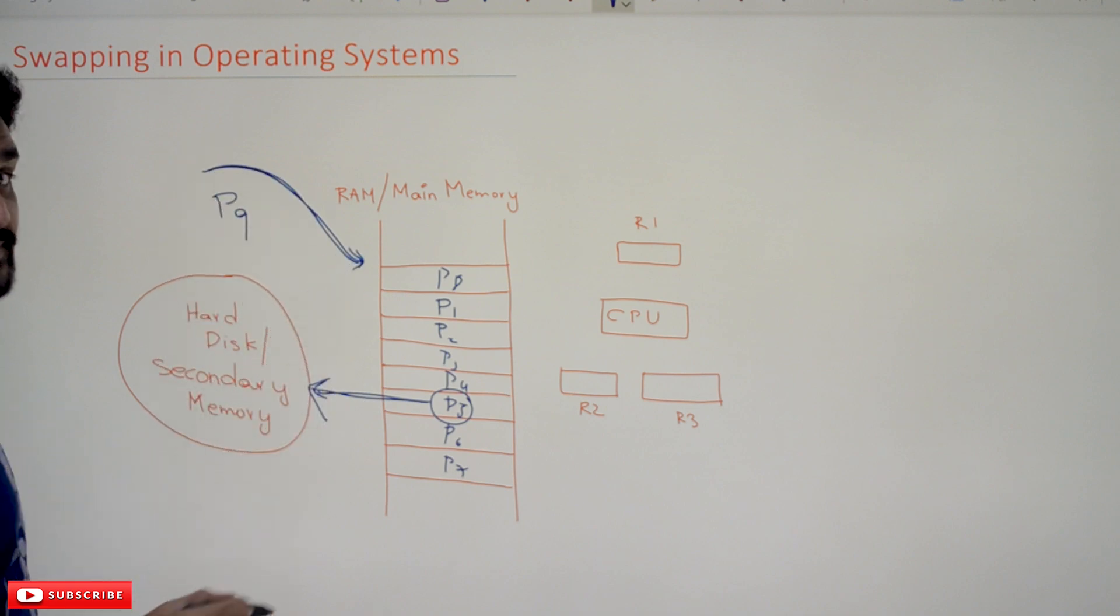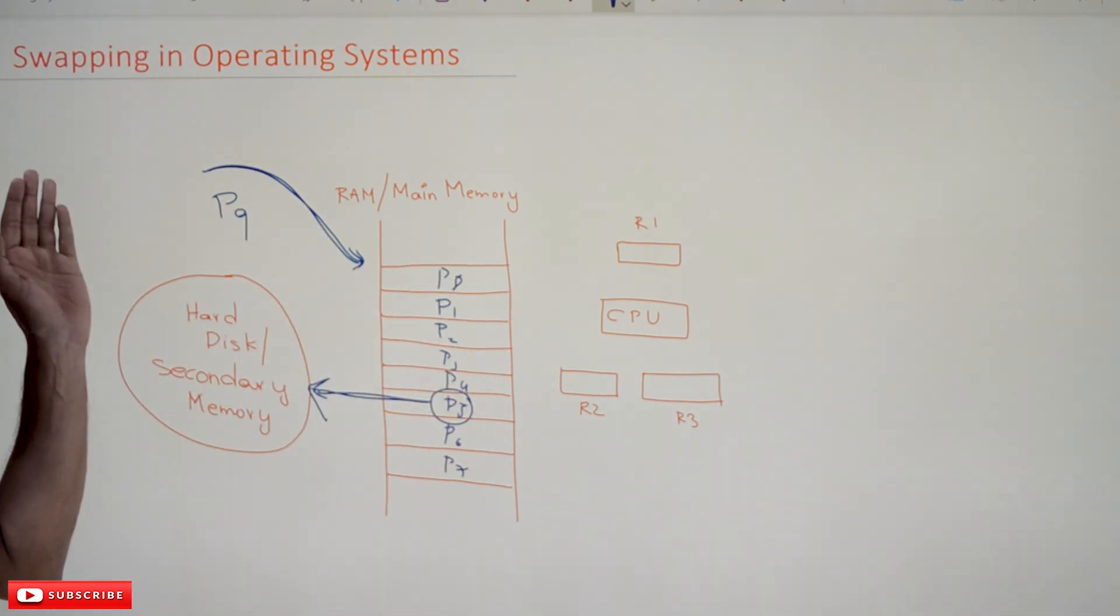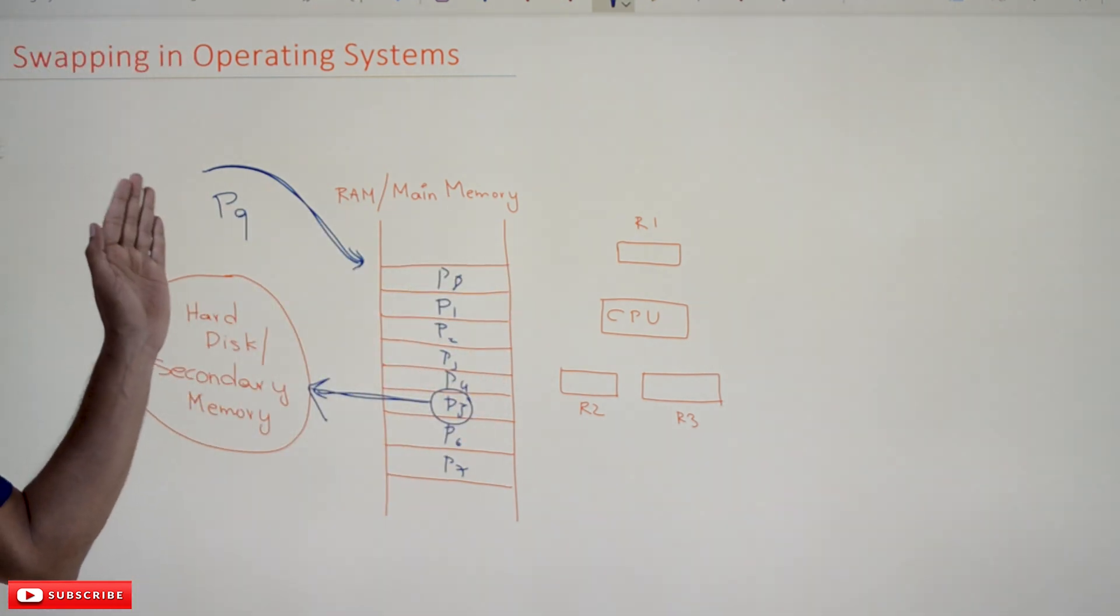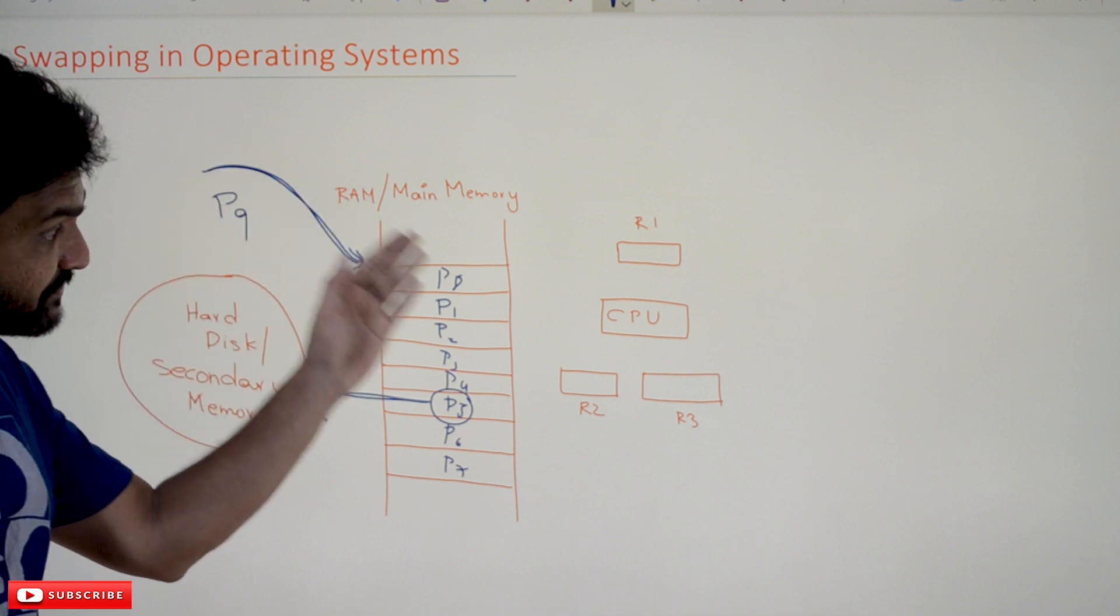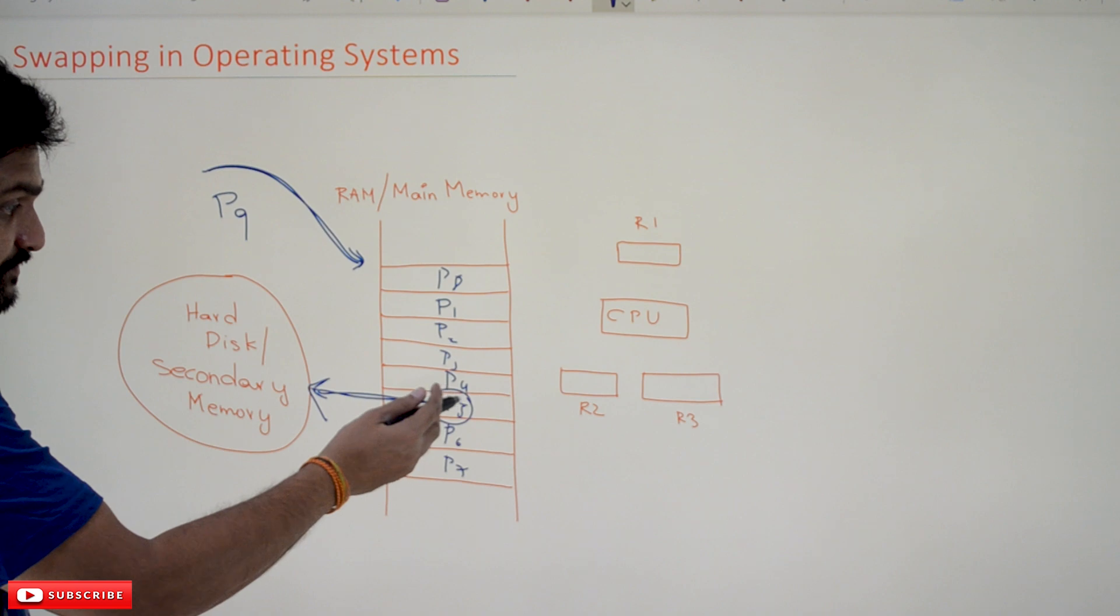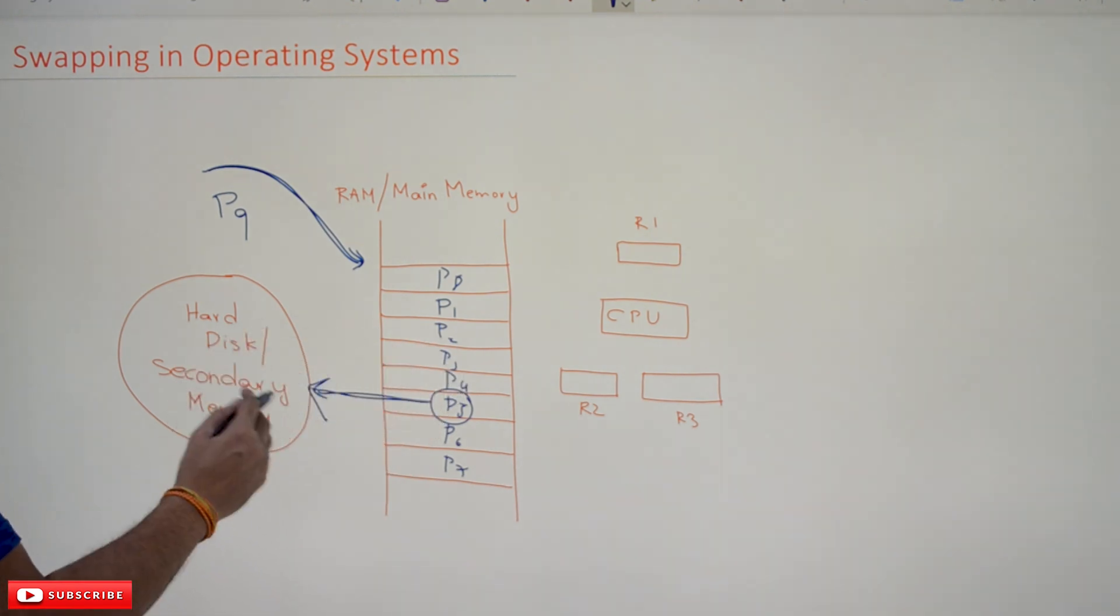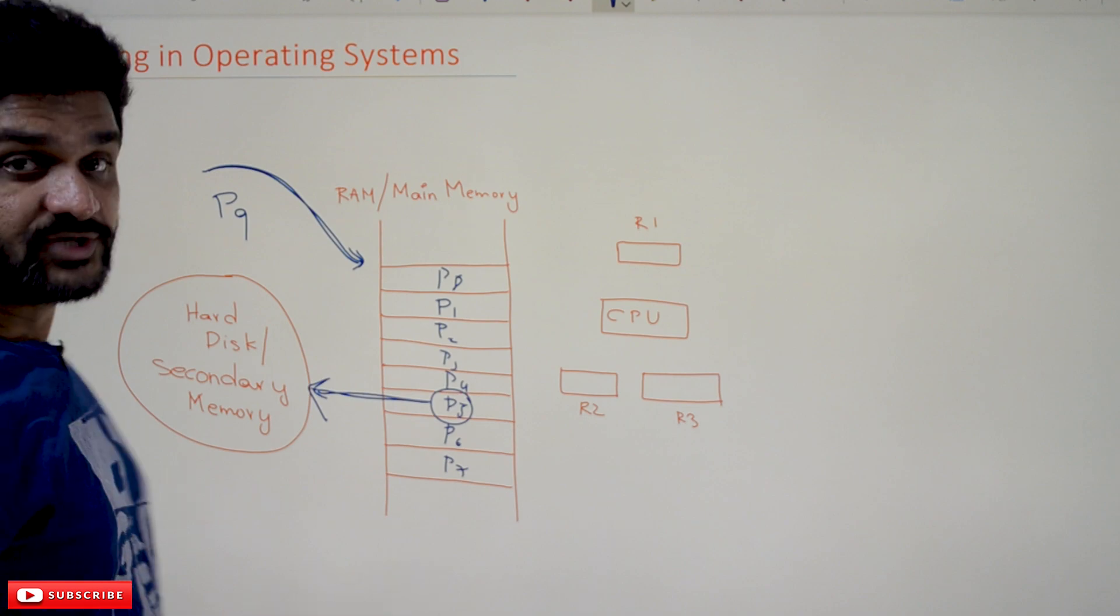So this is what we call swapping. Entering the process from hard disk to main memory is what we call swap in, and bringing the process from main memory to hard disk is what we call swap out.